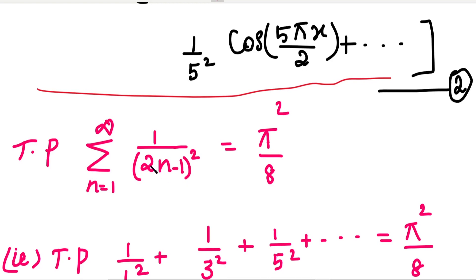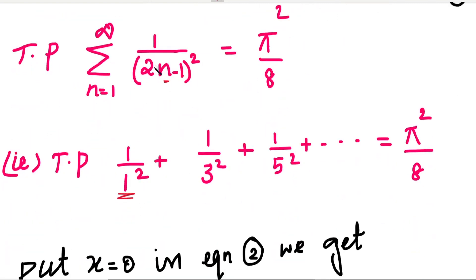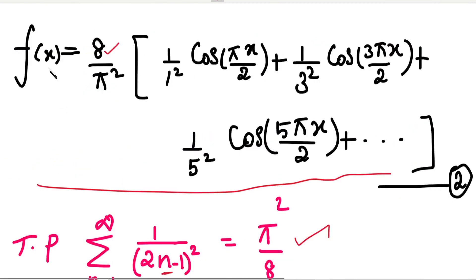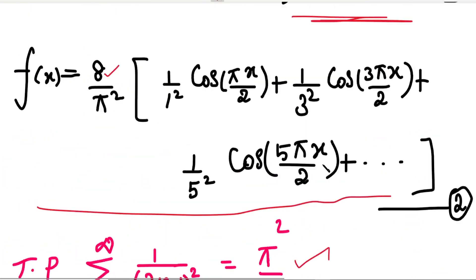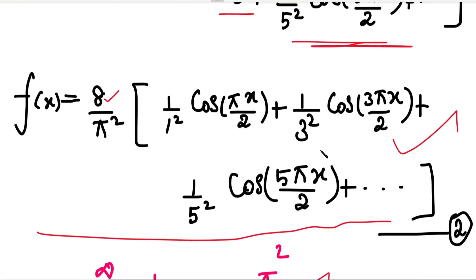Now let's prove the deduction part: to prove summation of 1/(2n-1)² = π²/8. The series has terms 1/1² + 1/3² + 1/5² + etc. We can see a similar series with cosine terms in our Fourier series. Since we need cos terms to equal 1, we should choose x = 0 because cos(0) = 1. We will substitute x = 0 in the Fourier series equation.